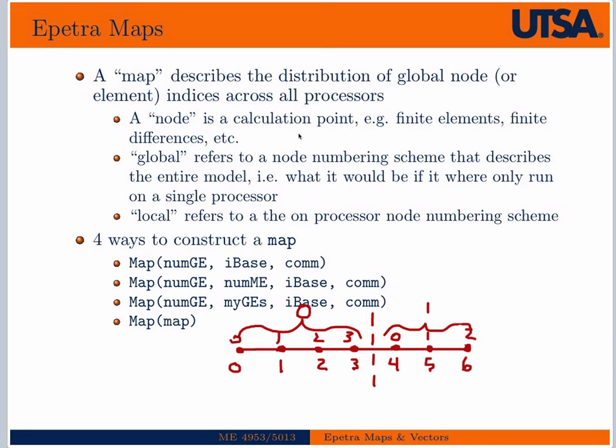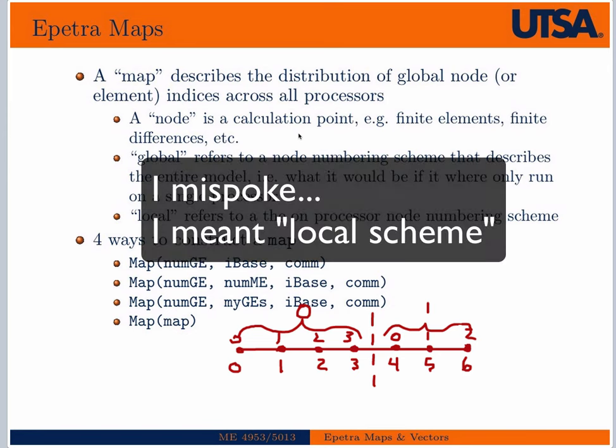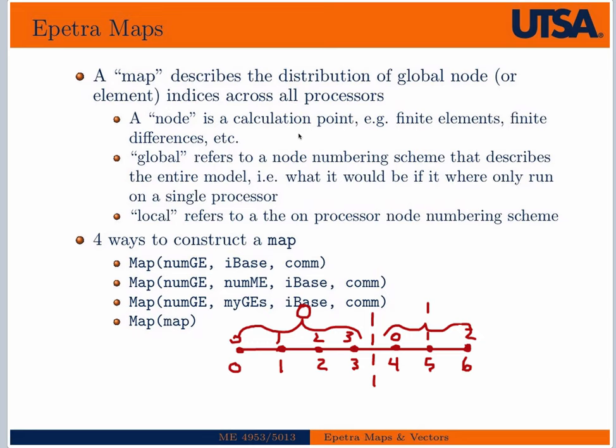This is typically done because on each processor we'll want to write some loops that loop over the local scheme — zero, one, two, three — in a general way. But at some point we're going to need to assemble or bring the values that occur locally into some global array. We'll learn how to do that later within the context of Epetra. But basically, a map maps a local to a global node numbering scheme.